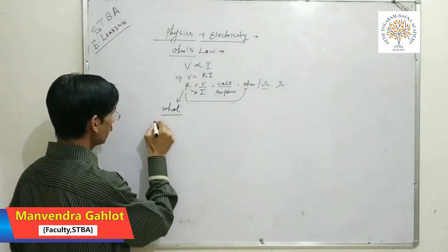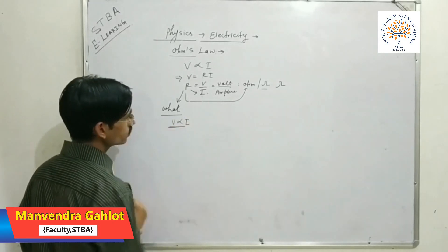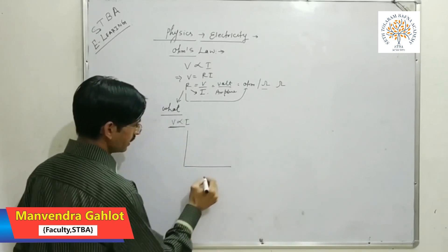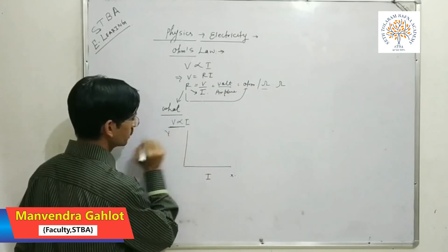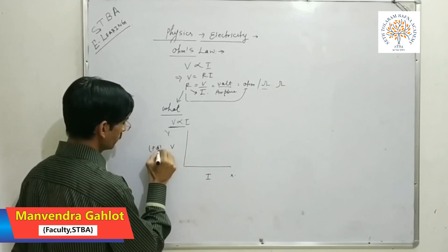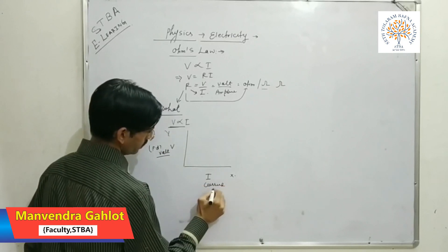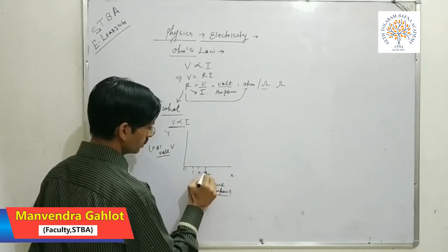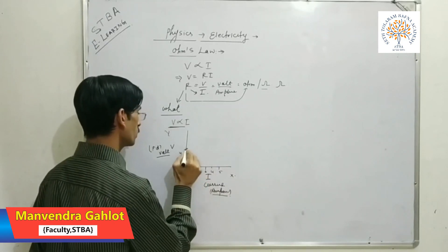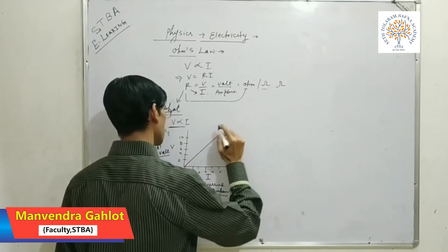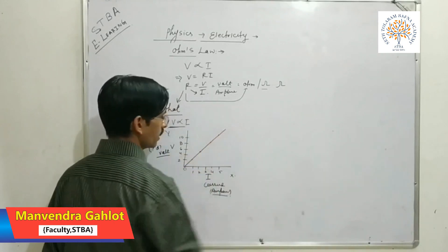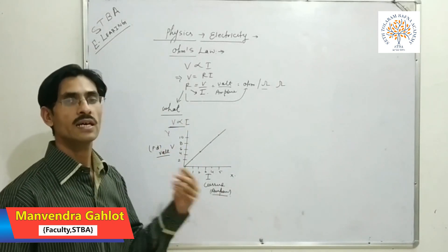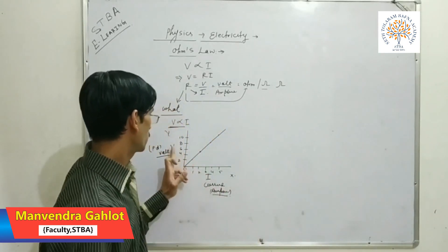There is a graph. If you plot a graph between V and I — because according to Ohm's law V is directly proportional to I — we take potential difference in volts on the y-axis and current in amperes on the x-axis, marking values 0, 1, 2, 3, 4, 5 and 2, 4, 6, 8, 10. We find it becomes a straight line, which means V is directly proportional to I, confirming that current is directly proportional to potential difference.